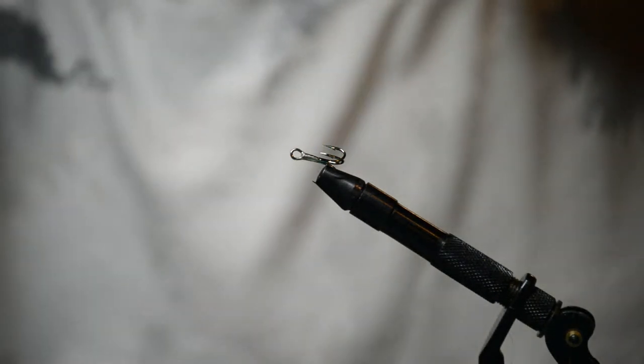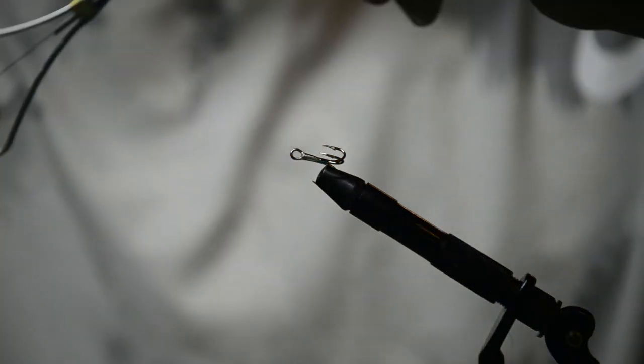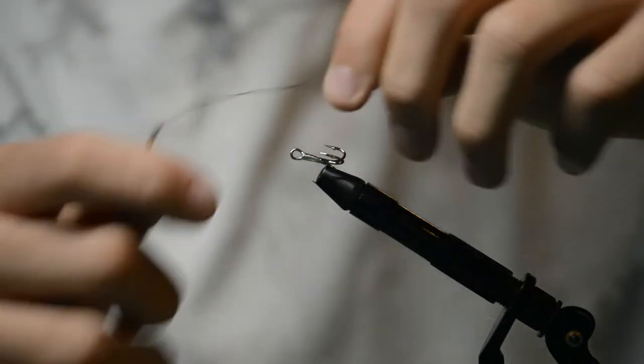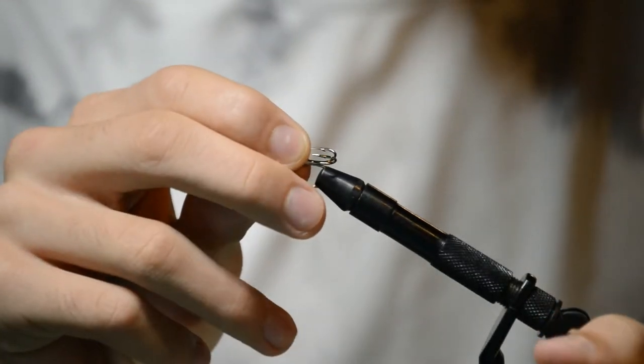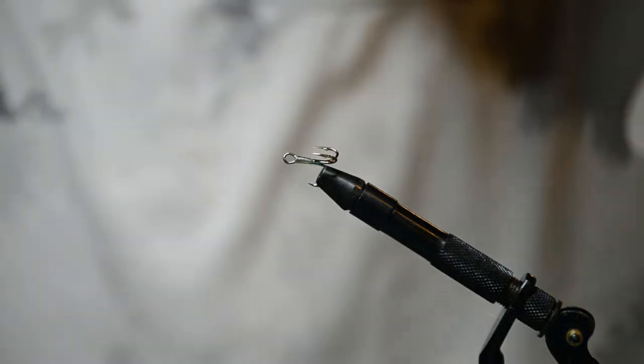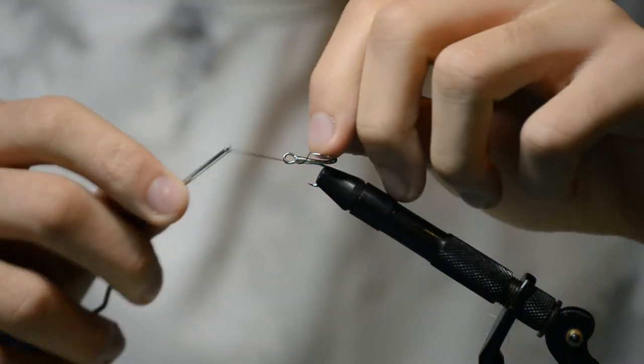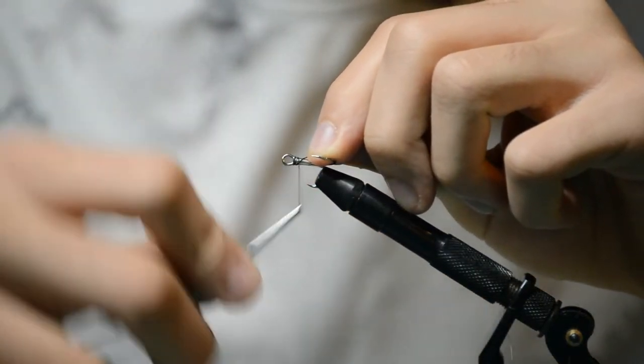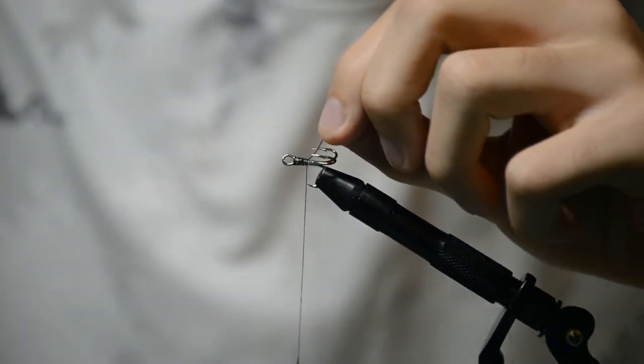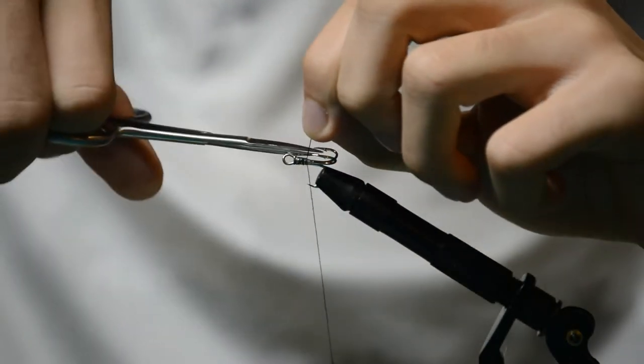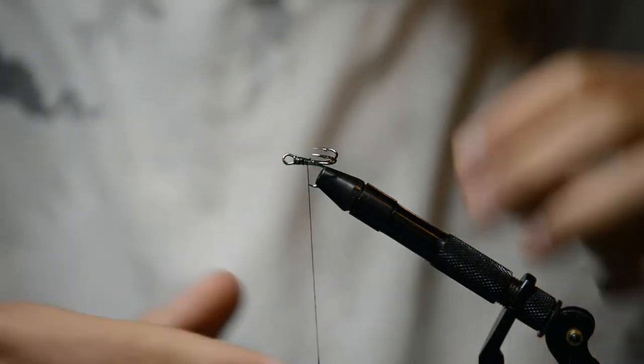So what you're gonna do first off, I probably should have this better positioned. So you're gonna start by making a few wraps, getting thread onto the hook. Then you're just gonna trim that right there.